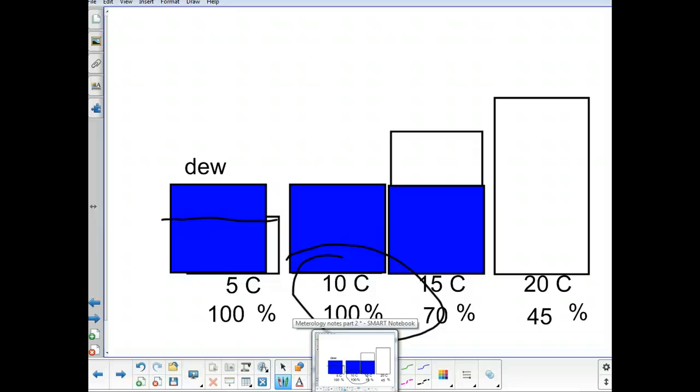These are really key concepts when we start talking about weather and how we get clouds to form. So take a minute, have me check your notes, and then we'll move on to dry bulb, wet bulb temperatures, and figuring out how to calculate the relative humidity and dew point.